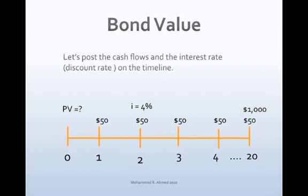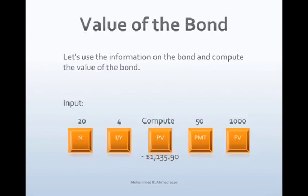The bond matures in 20 periods, with a semi-annual coupon rate of 5% and a required rate of return of 4% semi-annually. Enter into the calculator: N=20, I/Y=4, PMT=50, FV=1000. Press CPT and PV (TI) or just PV (HP). The present value is $1,135.90. The value of the bond is $1,135.90.